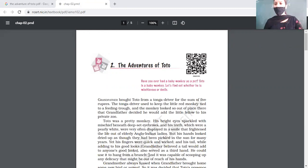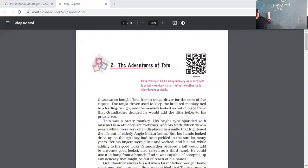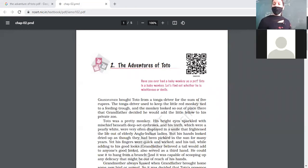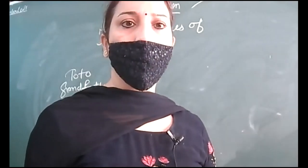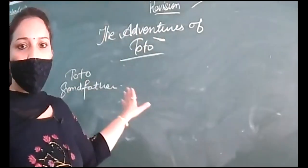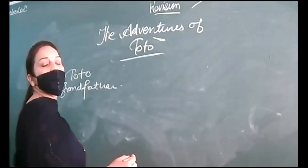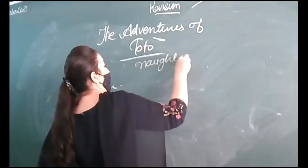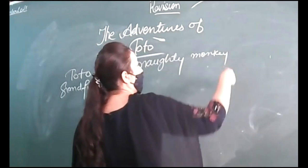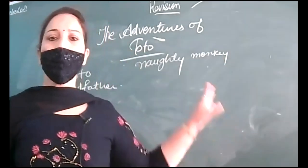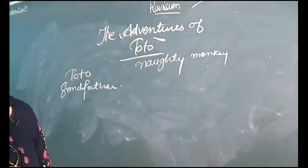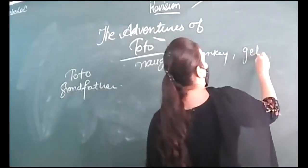This chapter revolves around two main characters — that is Toto and Grandfather. Write down: first is Toto, and second is Grandfather. Toto is basically a very naughty, very mischievous monkey. Toto is the name of a monkey and he always gets into trouble.